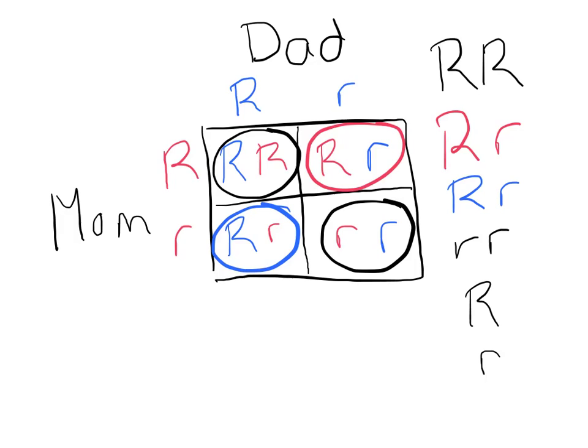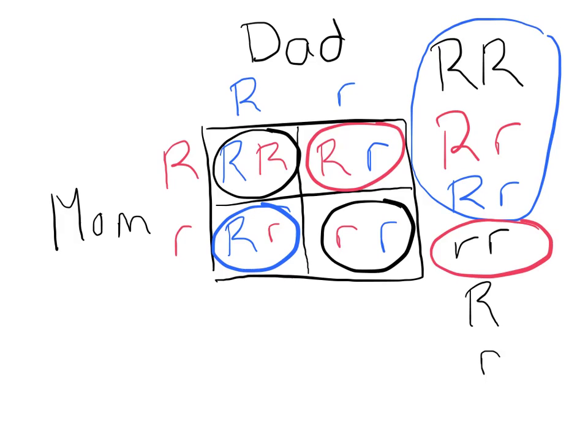Our phenotype possibilities are either tongue roller or non-tongue roller. In this case, 75% — three out of every four offspring — would have the tongue rolling phenotype, whereas there's only a 25% chance that an offspring would have the little r, little r genotype, giving a phenotype of non-tongue rolling.